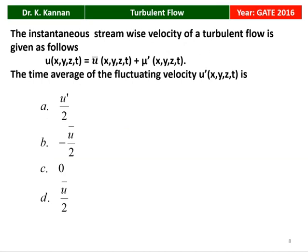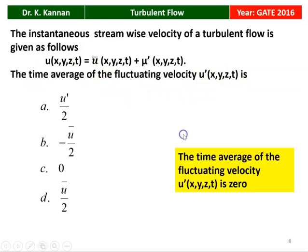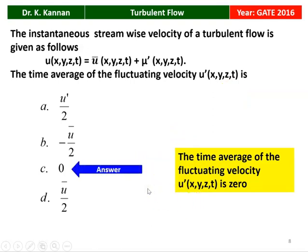The next question from the 2016 question paper: The instantaneous streamwise velocity of a turbulent flow is given as u(x,y,z,t) = ū(x,y,z,t) + u′(x,y,z,t). The time average of the fluctuating velocity u′ is equal to 0. Option C, 0, is the correct answer.